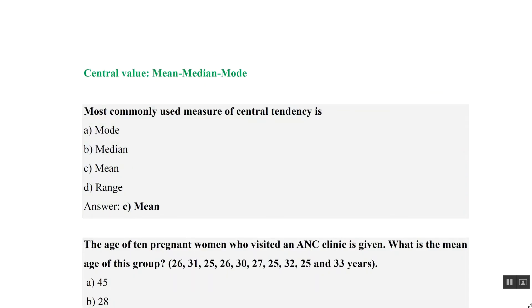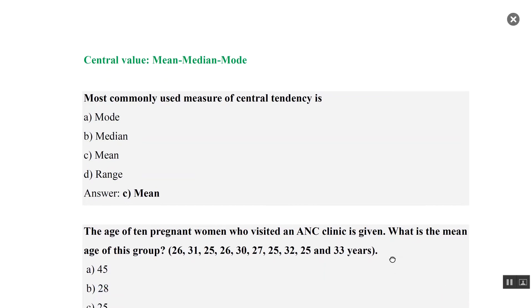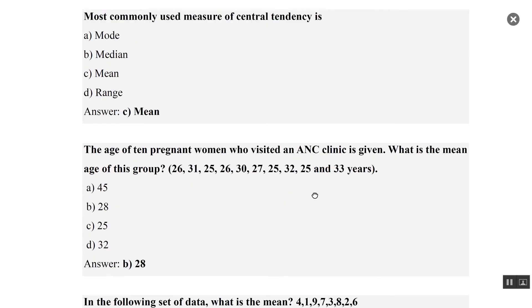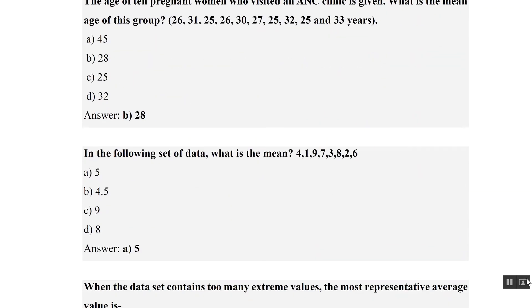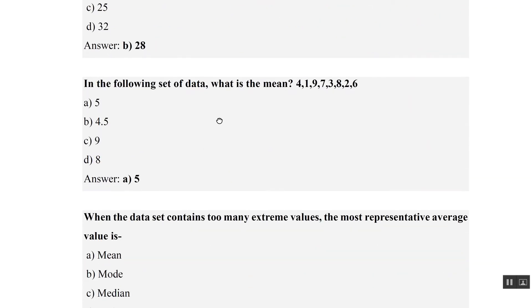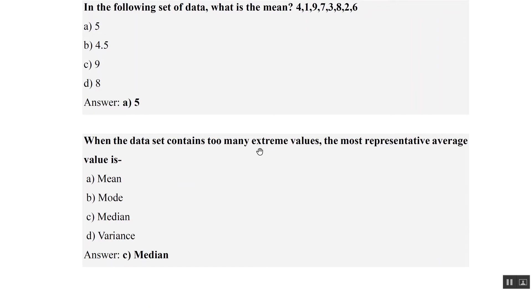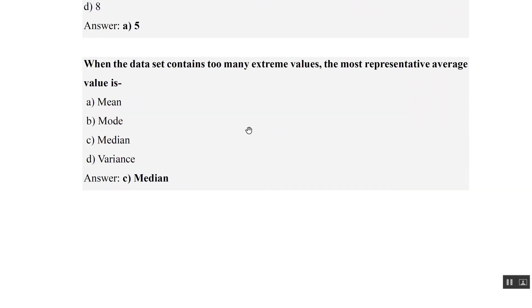The most commonly used measure of central tendency is mean. The ages of 10 women are given — find the mean by doing the sum and dividing by 10. If extreme values are present, the most representative average is the median.